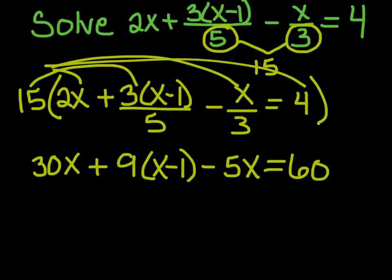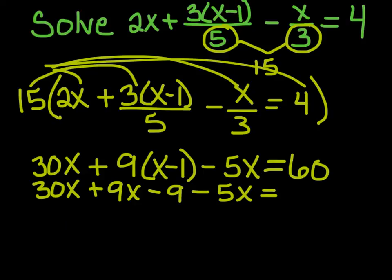So now I don't have fractions anymore. Now I have something that's really easy to put together. I want to distribute my 9. So 30x plus 9x minus 9 minus 5x equals 60. And we want to combine like terms.